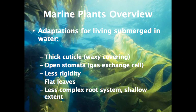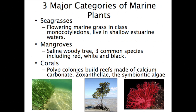Marine plants have some adaptations for living submerged in water: a thick cuticle, open stomata for gas exchange, less rigidity than land plants, flat leaves, and a less complex root system to a shallow extent. Three major categories of marine plants include seagrasses, mangroves, and corals.